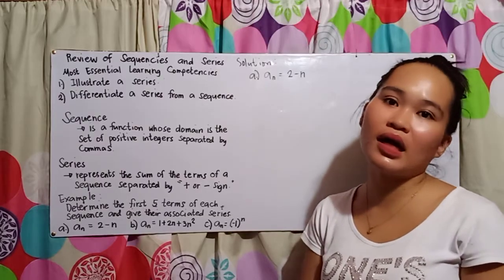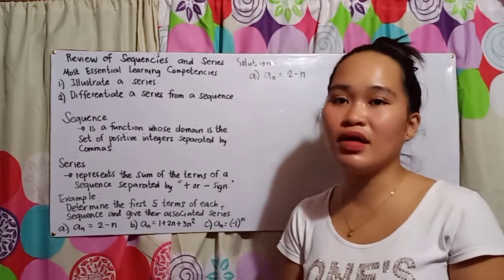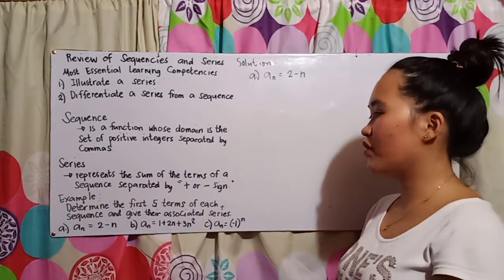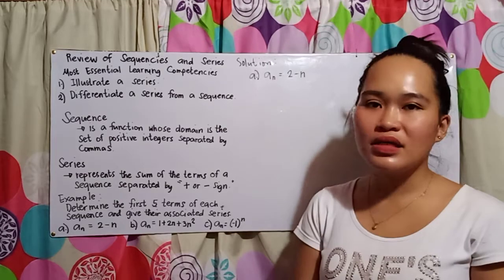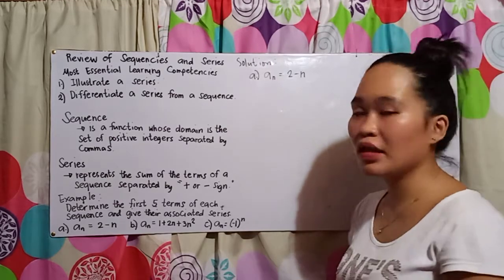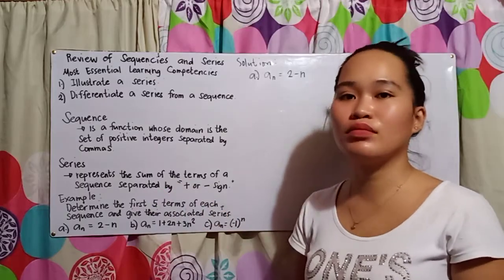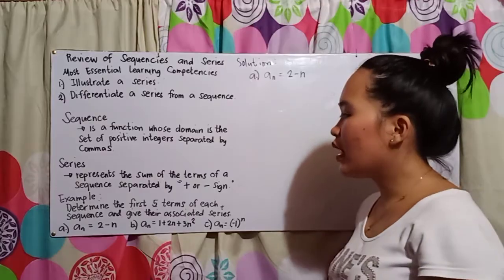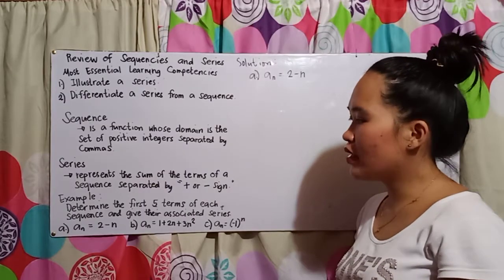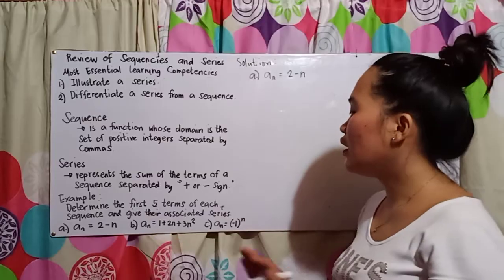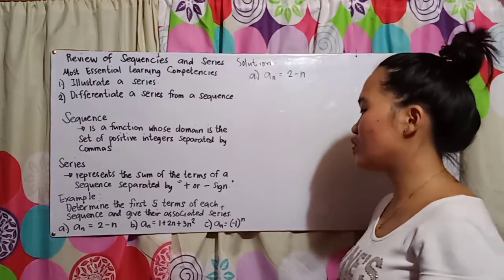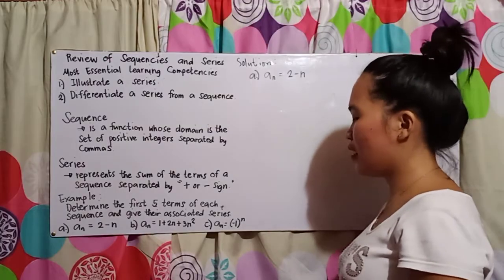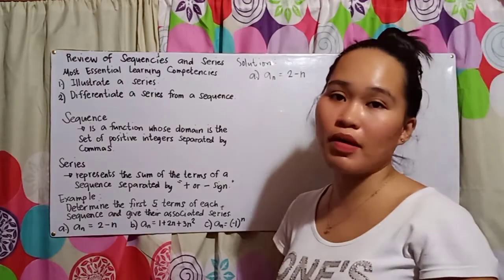For our example, determine the first five terms of each sequence and give their associated series. We will find five terms only. Letter A: a sub n equals two minus n. Letter B: a sub n equals one plus two n plus three n squared. Letter C: a sub n equals negative one raised to the power of n.